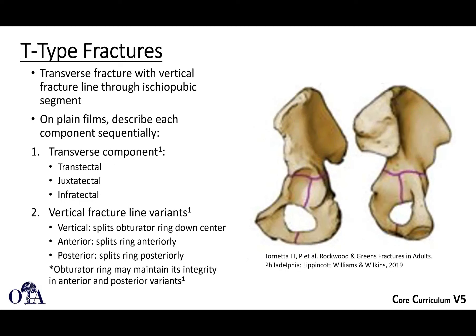What about T-shaped or T-type fractures? In this case, it's a transverse fracture with a vertical limb — it literally forms a T. The transverse component again must be described as transtectal, juxta-tectal, or infratectal. The vertical fracture line may come down the middle, or deviate to one side — but this variant tends not to change your management that much.